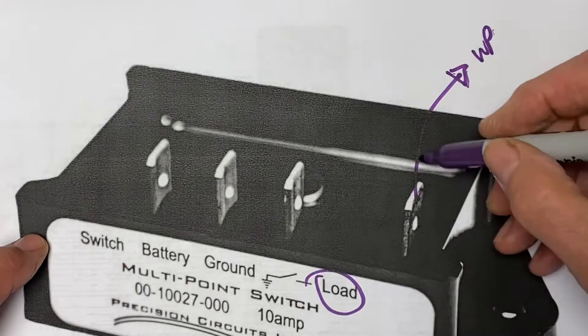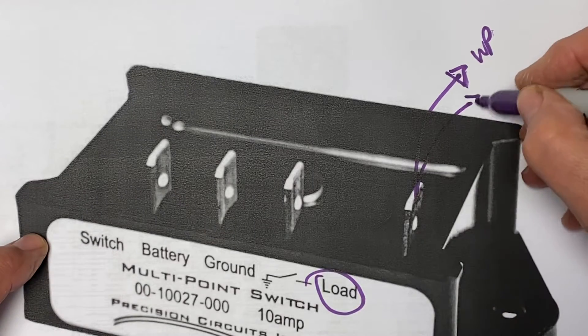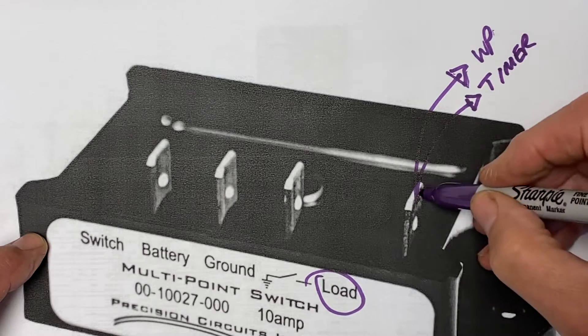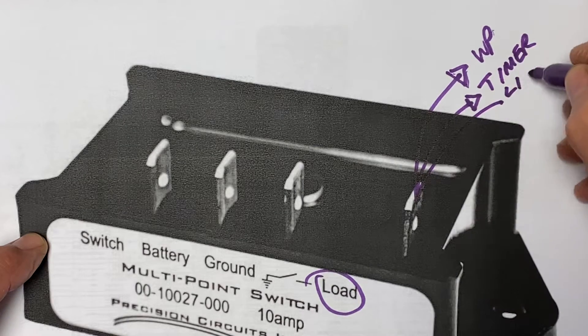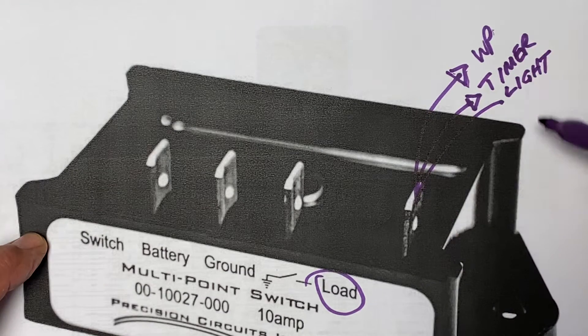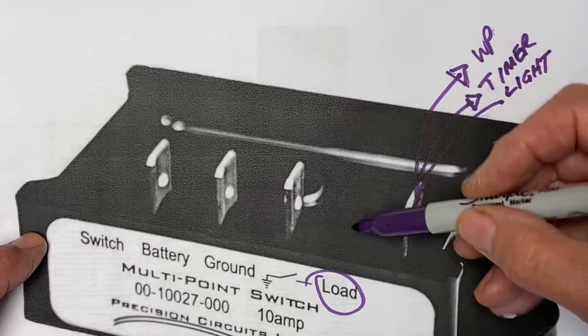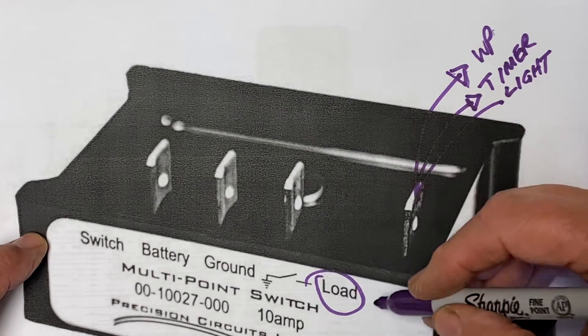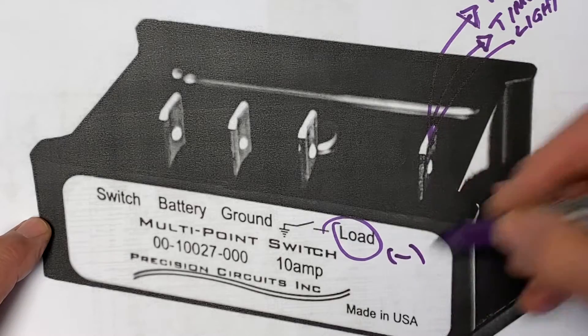The load can be a timer. The load can be a light. Anything that has its circuit completed by this latching relay. Now, the load is the negative leg of the circuit.